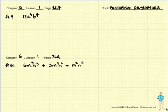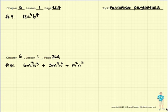Good morning. Chapter 6, Lesson 1 is on page 264. We're starting a new chapter. We're going to be factoring polynomials instead of multiplying them using FOIL or the box. We're going to be going backwards. Factoring is the opposite of multiplication. Factoring is the opposite of distribution.